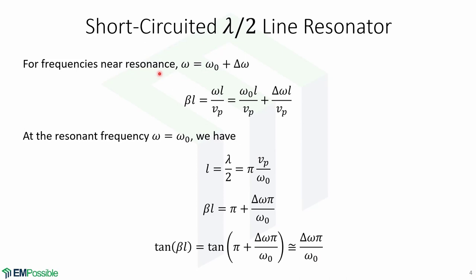Now let's look at frequencies near resonance to find beta-L. Remember that omega equals omega-0 plus delta-omega. Now beta-L equals omega-L over the phase velocity, which is equal to omega-0*L plus delta-omega*L over the phase velocity. At the resonant frequency omega-0, we have L equals lambda over 2, equal to pi times the phase velocity over the resonant frequency. We can substitute this and write beta-L as pi plus delta-omega times pi over omega-0. The tangent of beta-L is roughly equal to delta-omega times pi over omega-0.